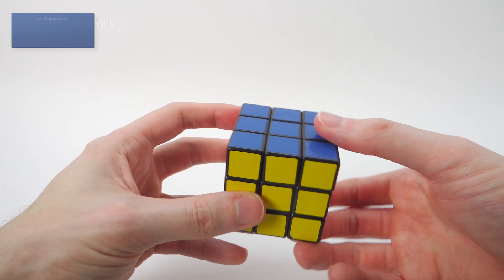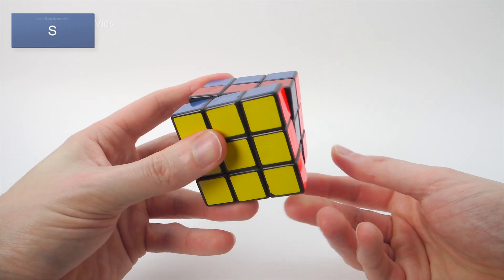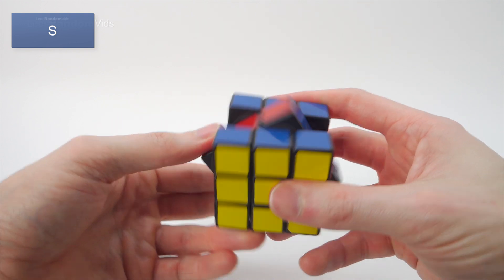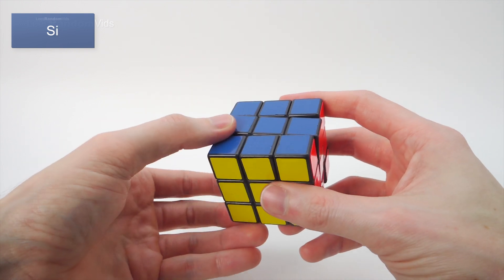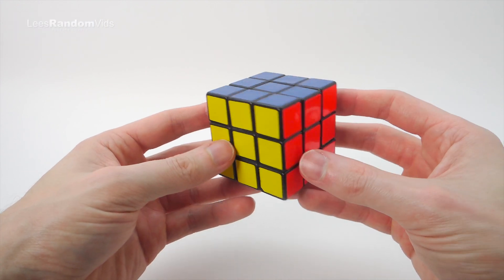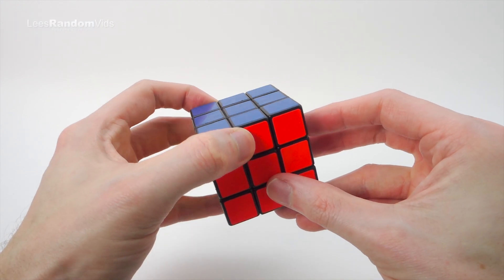And for this one here, this side one, we give the letter S. And that would be S, and that would be S inverse. Now it's not very often we need to use these letters, but for these first few patterns that I'm going to show you, we will do.